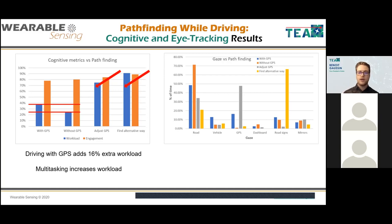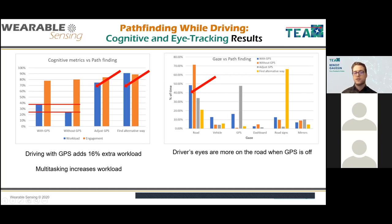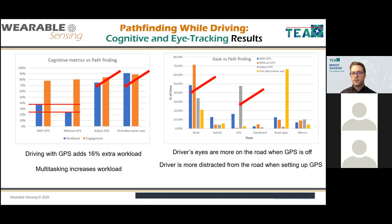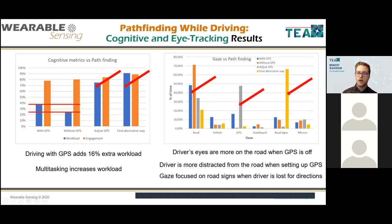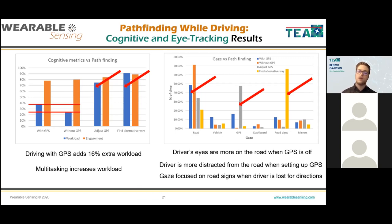Analyzing gaze with the GPS: driver's eyes are more on the road when the GPS is off — about 70% without GPS versus 50% with GPS. Second finding: the driver was most distracted when setting up the GPS — almost 50% of that time he was looking at the GPS itself rather than the road. When the driver was lost, he was looking at road signs about 65% of the time, searching for new navigational information.